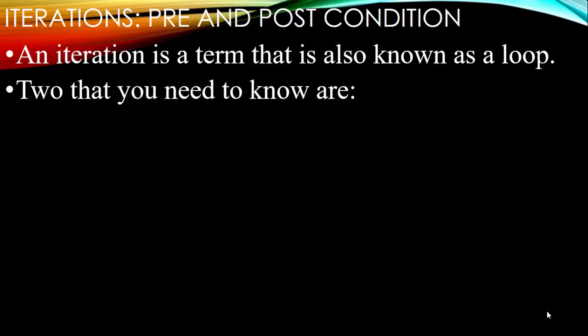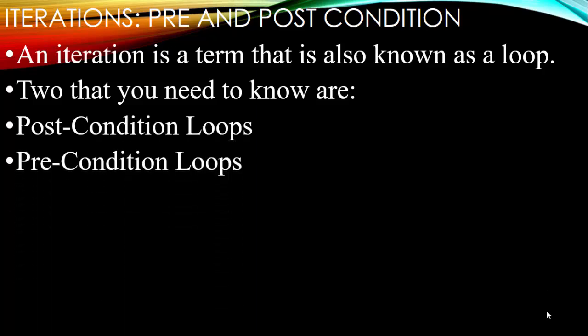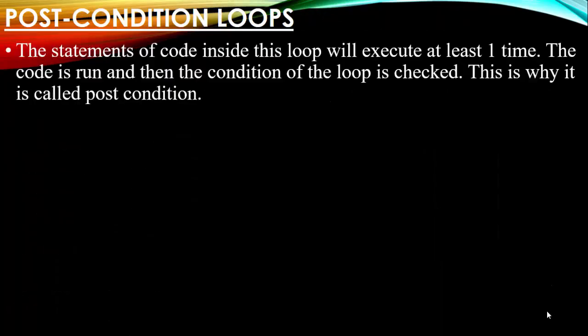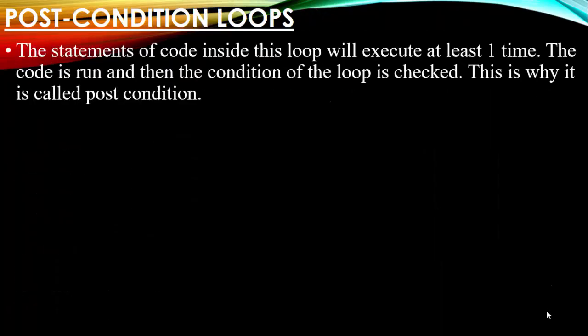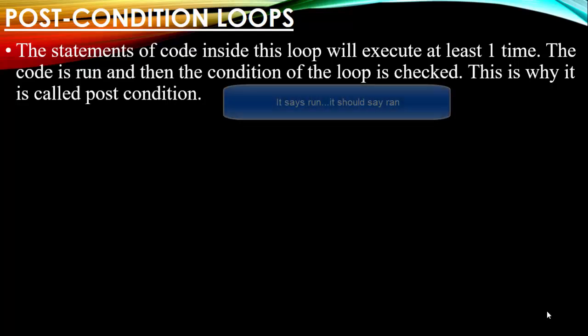The two you need to know are the post condition loops and the precondition loops. I thought post condition was the best way to go. You don't just start typing in loops until it does what your program wants. You really need to understand the difference between the two so your code runs efficiently. We'll start with post condition loops — the statements inside the loop will execute at least one time. If you know the loop needs to execute at least one time, you use a post condition loop.